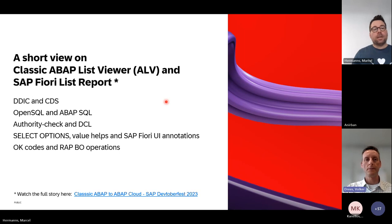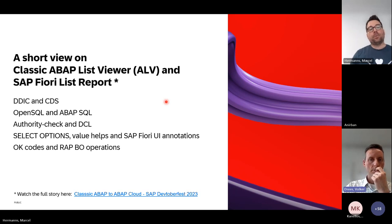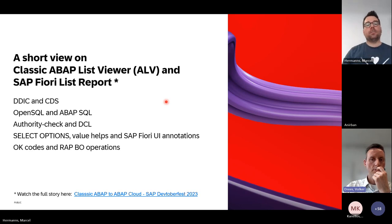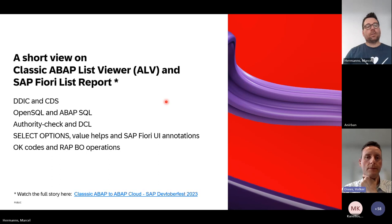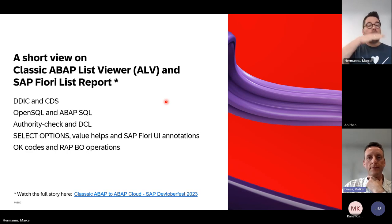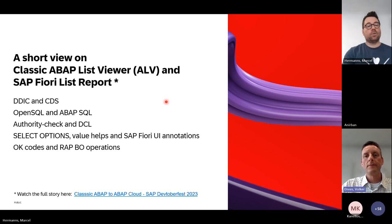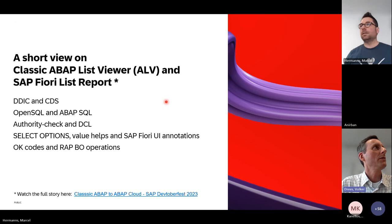The authority check in ABAP is still very important, but instead of doing SELECT and SELECT, we now have a DCL — a Data Constraint Language — which describes how the authority object is related to the database view. This is a modeling aspect: every time we use the CDS view, the DCL is considered automatically. We don't have to remember to always apply the same authority object everywhere. It's connected to the CDS view and applied automatically, making our lives easier.